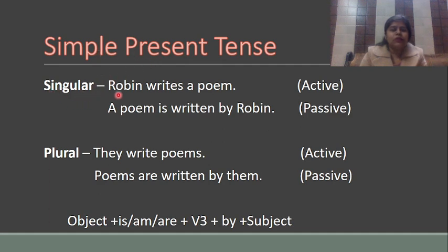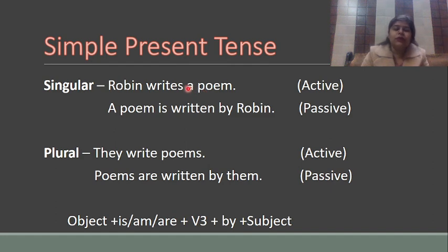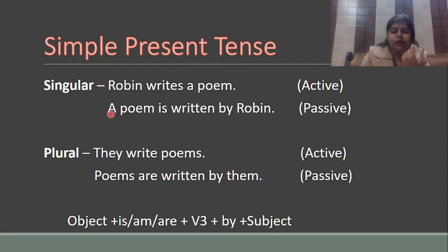'Robin writes a poem.' Robin is the subject and writing a poem is the active form. While changing active to passive, we interchange the positions of subject and object. In place of subject we write the object, and in place of object we write the subject. So: 'A poem is written by Robin.' That is the passive form when the subject is singular.